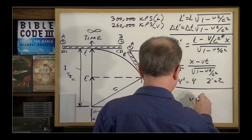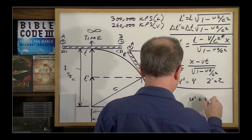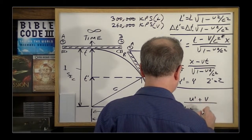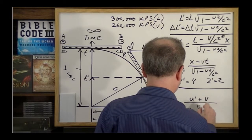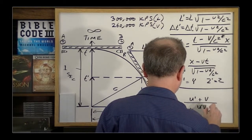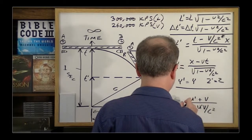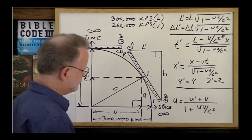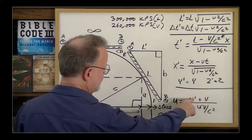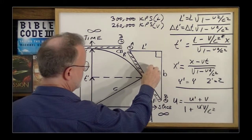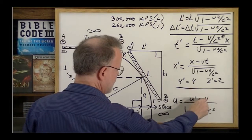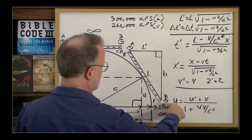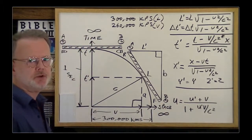u prime plus v over one plus u prime v over c squared, and that equals u. So here you have u prime - that's the speed of the bullet as they see it. So you have 260 plus the velocity of the spaceship which is 260, divided by this, gives you the result of 297,000 kilometers per second.